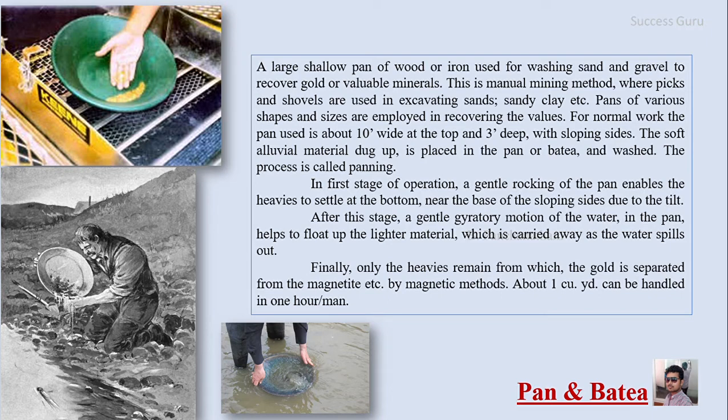The first stage of operation is a gentle rocking of the pan, enabling heavier material to settle at the bottom near the base of the sloping sides due to tilt. After this, a gentle gyratory motion is given to the water in the pan, which helps float the lighter materials that are carried away as the water spills out. Finally, material with high specific gravity — such as gold, magnetite, or other heavy minerals — settles at the bottom of the pan.